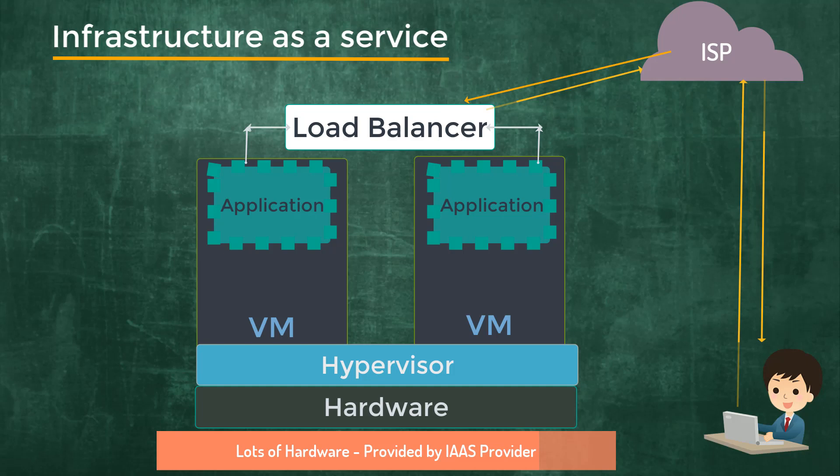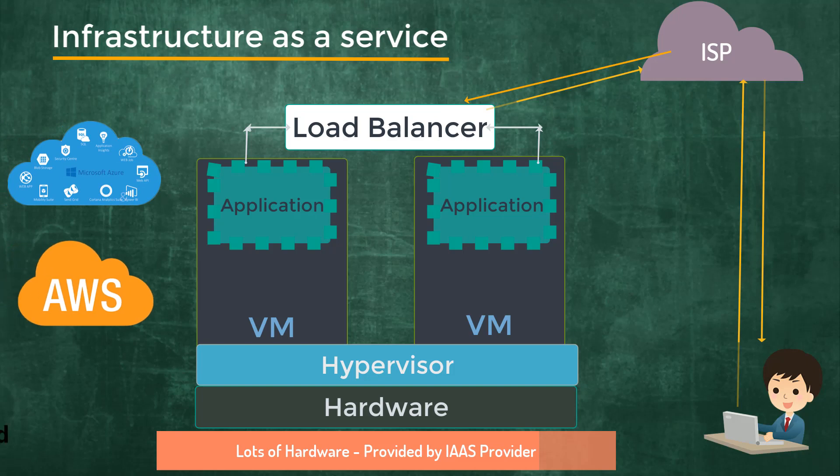All the servers, storage, and the networking hardware, as well as the hypervisor layer will all be provided by the cloud provider — like Microsoft Azure, Amazon, IBM Cloud, etc. So you do not have to worry about the underlying cabling or procuring the hardware for your virtual machine. As an infrastructure as a service customer, all you have to do is have access to the internet and probably a subscription with the cloud provider.